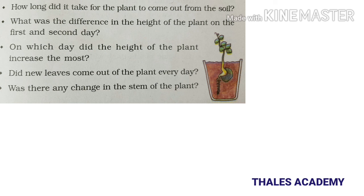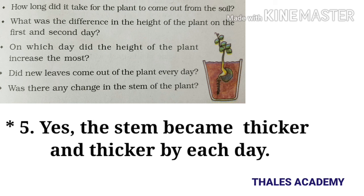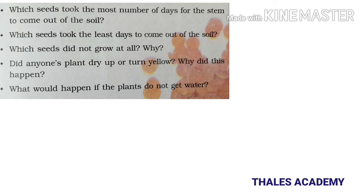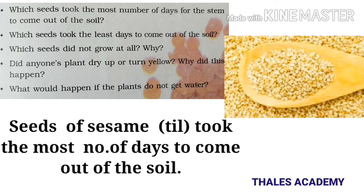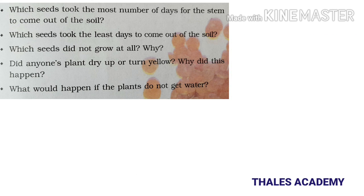Did new leaves come out of the plant every day? Yes, new leaves came out every day. Was there any change in the stem? Yes, the stem became thicker and thicker each day. Now discuss: which seeds took the most number of days for the stem to come out of the soil? Seeds of sesame took the most number of days.